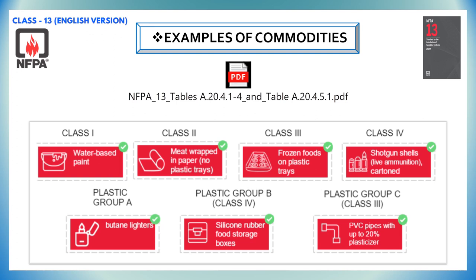For example, water-based paint comes under class 1 classification. Meat wrapped in paper with no plastic trays involved is class 2. Frozen food on plastic trays comes under class 3. Shotgun shells carton comes under class 4. Group A plastics — butane lighters, silicone rubber foot storage boxes — come under group B plastic or class 4 commodity. PVC pipes with up to 20% plasticizer come under class 3 type or group C plastic type. All these can be found in NFPA 13 tables as shown on the screen.